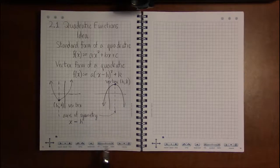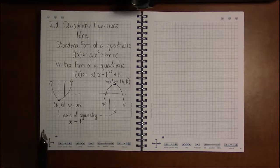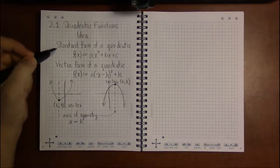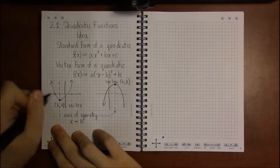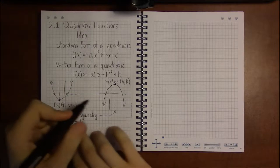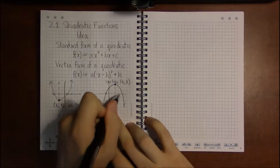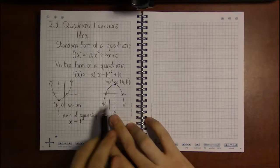Now typically you'll see quadratics have two x-intercepts, two places where they cross the x-axis. But that doesn't always have to happen.